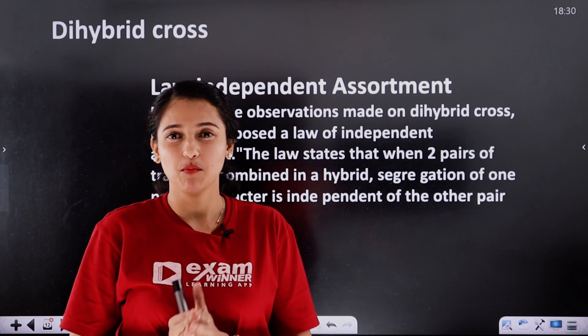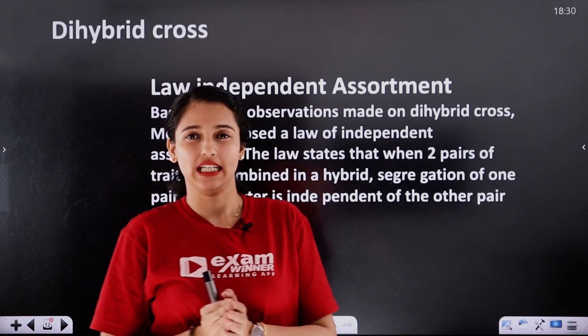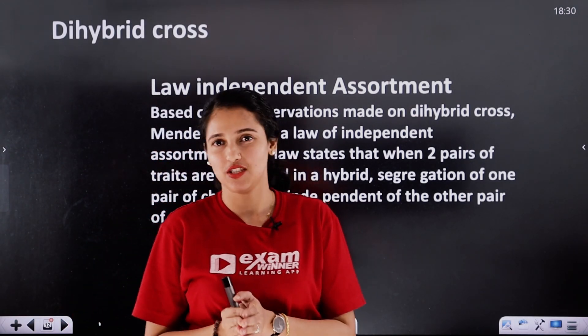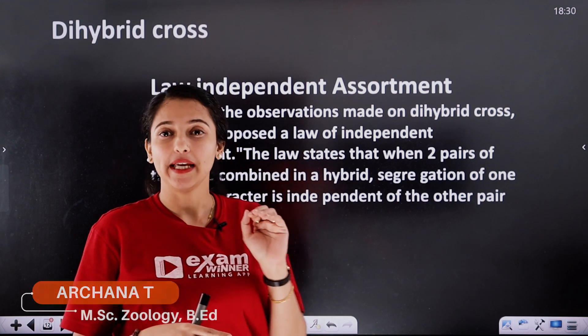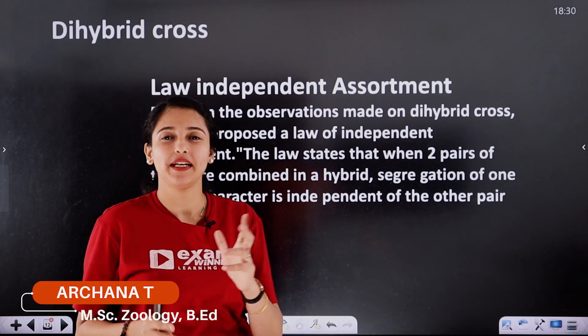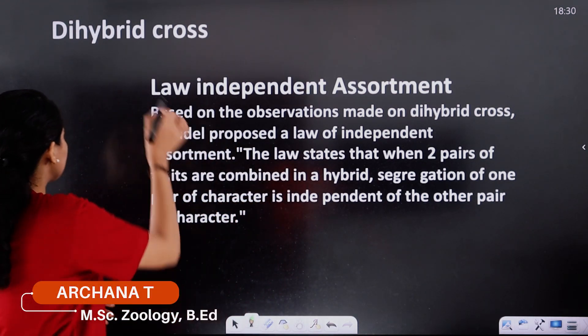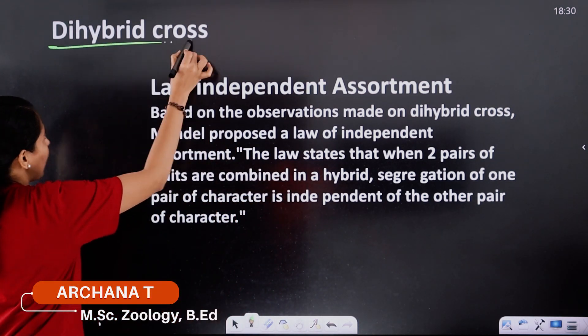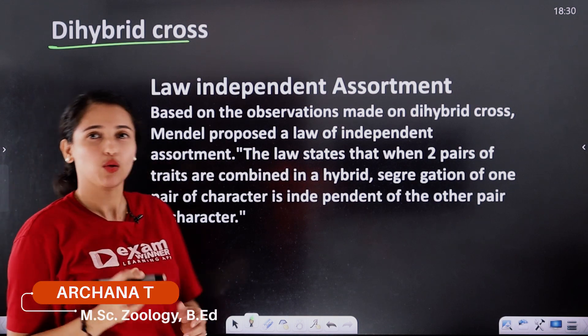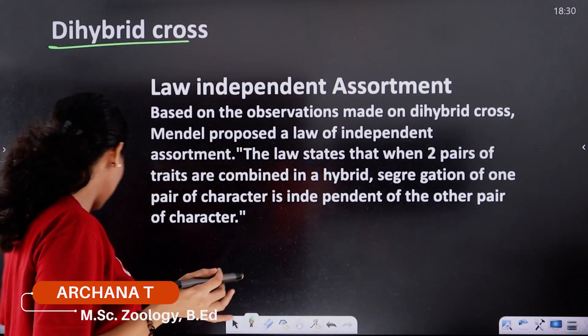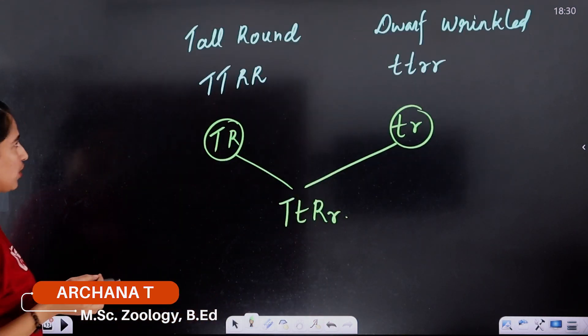This is the third law of independent assortment. If we formulate this law of independent assortment, we can talk about dihybrid cross. Let's start with dihybrid cross.